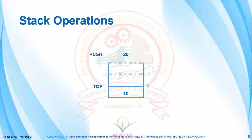Let us push another element 20 and the top becomes 2. And then 30 — now the top becomes 3. No more elements can be further inserted into this stack. This is called a stack overflow condition.